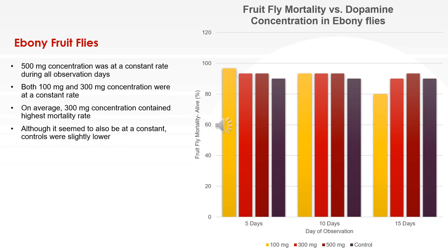For the ebony fruit flies — the dopamine mutants — concentrations of 100 mg, 300 mg, and 500 mg were used, along with a control. Observations were made on the 5th, 10th, and 15th day. The 500 mg concentration remained at a constant rate across all observation days, as did the 100 mg and 300 mg concentrations. However, on average, the 300 mg concentration had the highest mortality rate. The controls were slightly lower when averaged, which validated the expectation that flies with higher dopamine concentrations would show higher mortality.